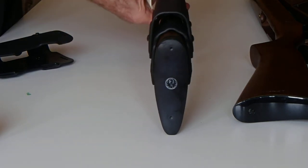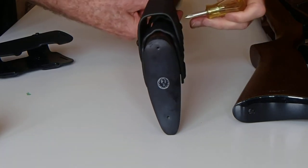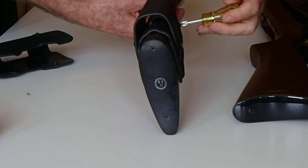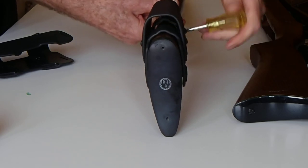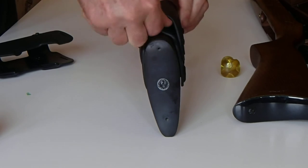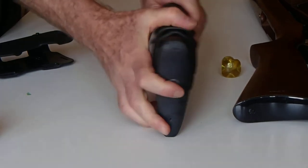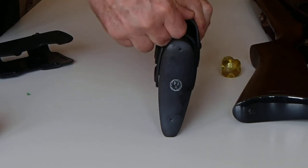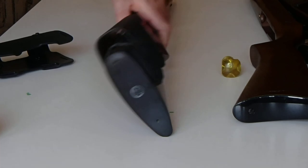Simply loosen the four screws for three turns each. Make your adjustment. Tighten the four screws and you're all set.